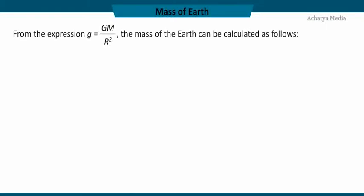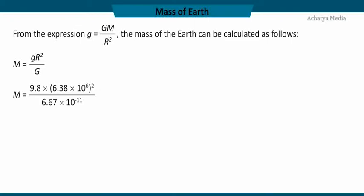From the expression g equals G·M divided by r squared, the mass of the earth can be calculated. M equals g·r squared divided by G, which equals 9.8 × (6.38 × 10⁶)² divided by 6.67 × 10⁻¹¹, giving M equals 5.98 × 10²⁴ kg.